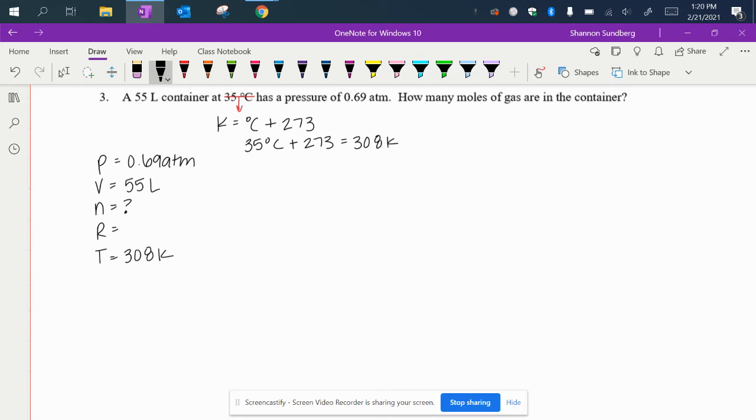R is the gas constant and you want to use the one that uses atmospheres for its units and that number is 0.0821 liters times atm over moles times Kelvin.